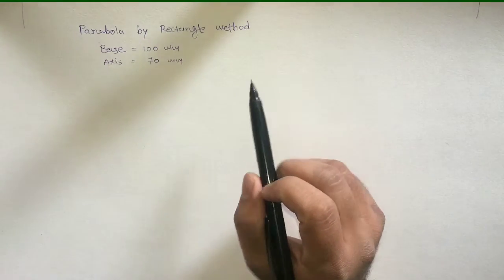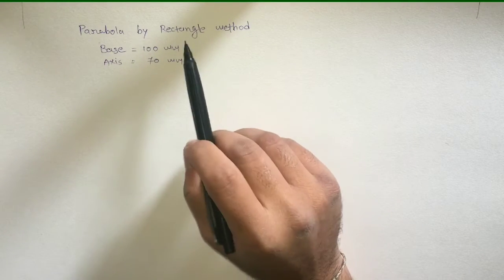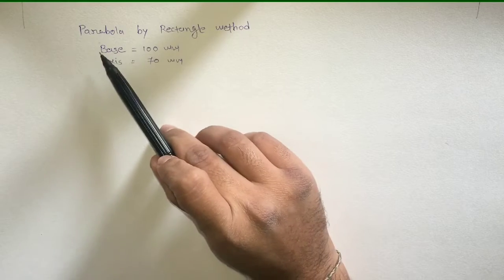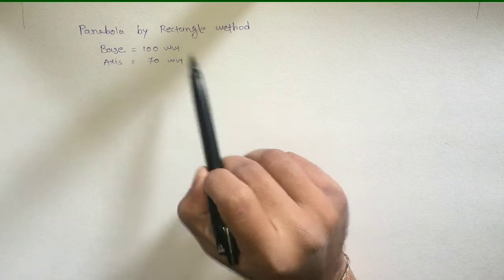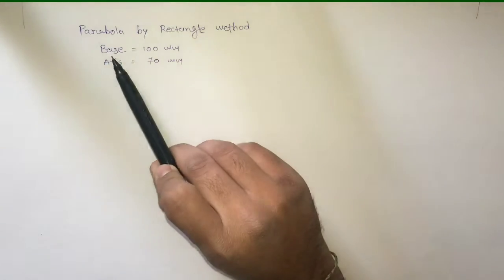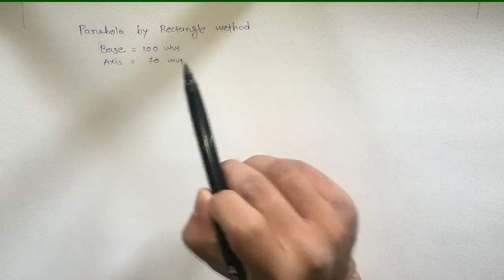Hello friends, welcome back to tutorial of EG. In this video I am going to discuss parabola by rectangle method. Let us assume base of the parabola is equal to 100 mm and axis is equal to 70 mm.